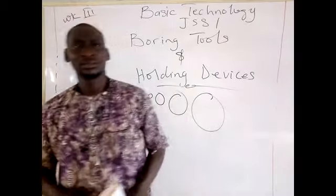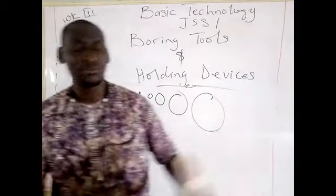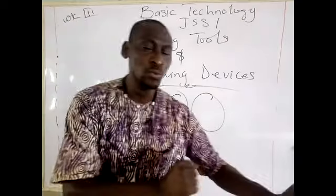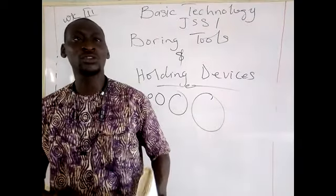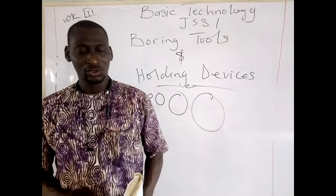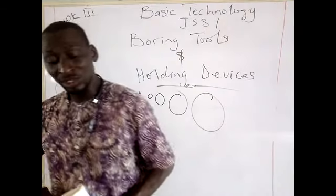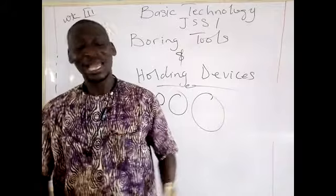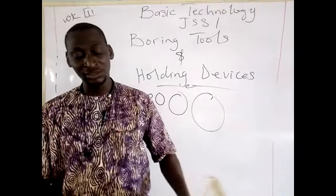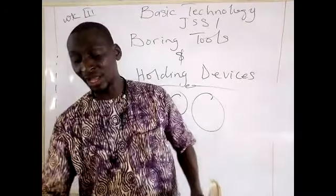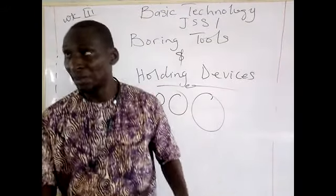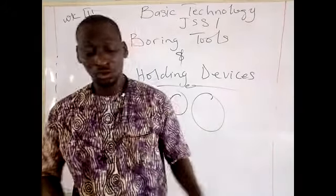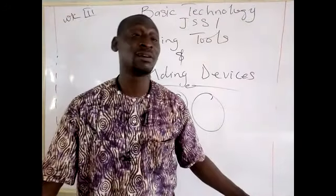For example, when a woodworker is working on a wood and wants to saw or remove material, the woodworker will make use of a saw. We also use what we call a plane — it is the plane that removes all the dirt on the wood to make it neat. If you want to use a sawing machine to split wood into two, you make use of a holding device.